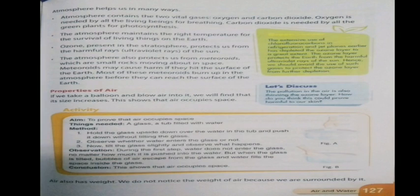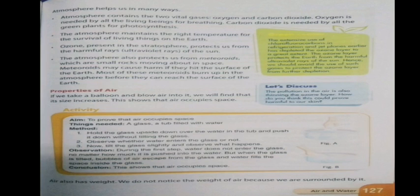The atmosphere helps us in many ways. It contains two vital gases — oxygen, needed by all living things for breathing, and carbon dioxide, needed by all green plants for photosynthesis. The atmosphere also maintains the right temperature for the survival of all living things on earth. It also contains the ozone layer in the stratosphere, which protects us from the harmful ultraviolet rays of the sun.